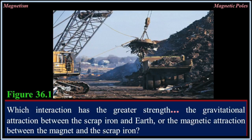Which interaction has the greater strength: gravitational attraction between the scrap iron and Earth, or the magnetic attraction between the magnet and the scrap iron?